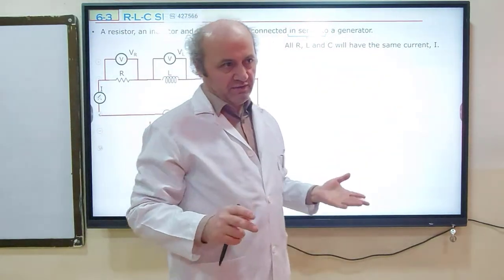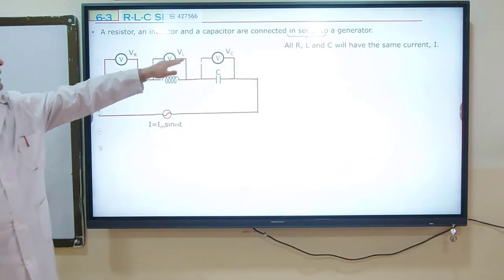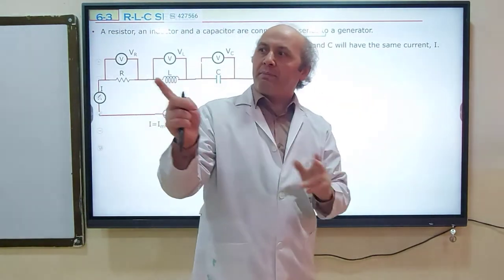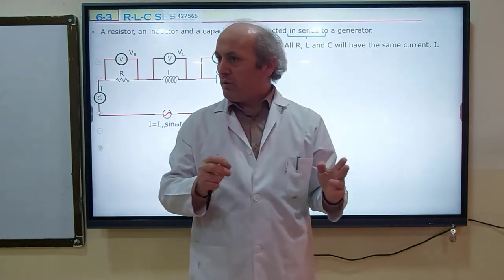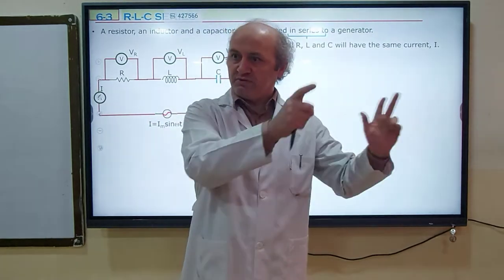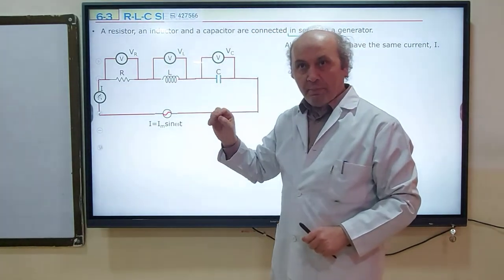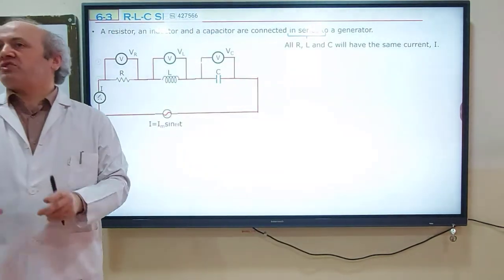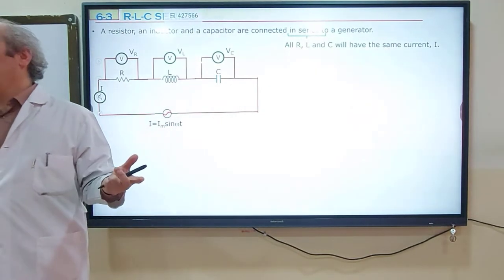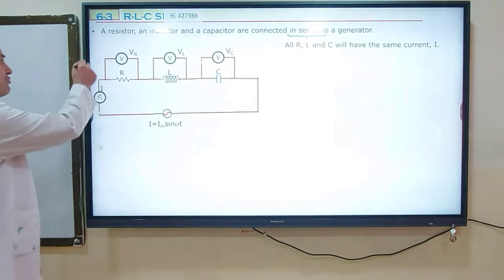But the potential differences are different. The potential difference across the resistor is VR, across the coil is VL, and across the capacitor is VC. In series, potential differences are added. Just as we add the potential differences of individual resistors in a series combination, we will add VR, VL, and VC — but we will add them as vectors, because their directions are different. Potential differences will be defined with respect to the electric current, since the electric current is the same for all.